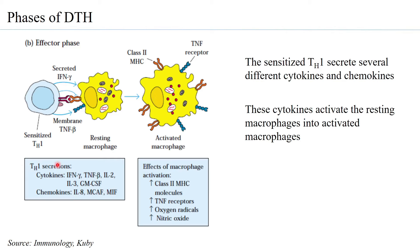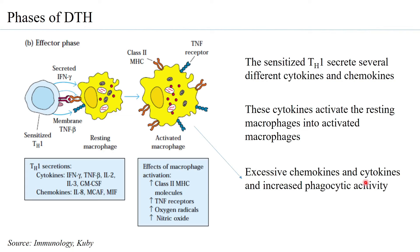With these cytokines, resting macrophages become highly activated. The number of class II MHCs on their surface increases, TNF receptors increase, free oxygen radicals increase within them, and nitric oxide increases within them. All of these make the activated macrophage more aggressive, leading to heightened phagocytosis — they present antigens and carry out phagocytosis much faster. These activated macrophages release excessive chemokines and cytokines, which in turn increases phagocytic activity, because more chemokines and cytokines recruit more macrophages to that particular site.